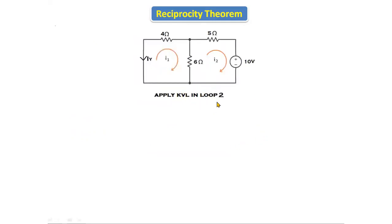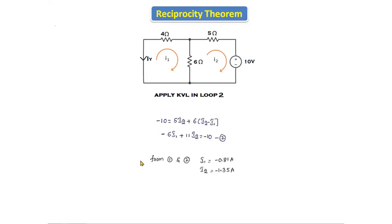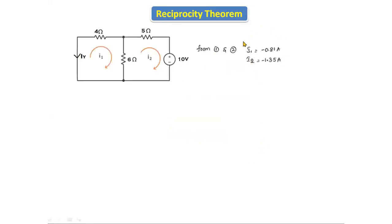Applying KVL in loop two, with current entering from the plus terminal, we get: minus 10 equals 5·I2 plus 6·(I2 minus I1). Expanding: minus 6·I1 plus 11·I2 equals minus 10. This is equation number two. Solving equations one and two, we get I1 equals minus 0.81 amperes and I2 equals minus 1.35 amperes.